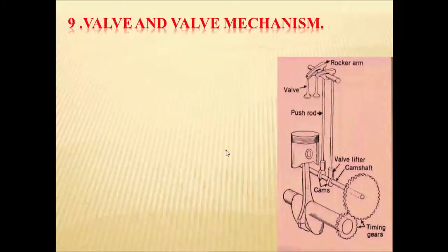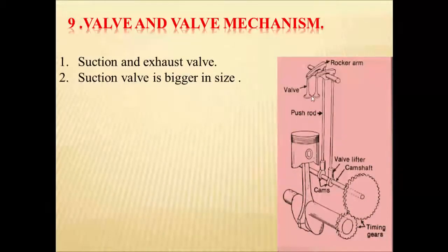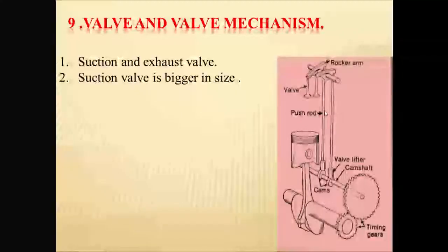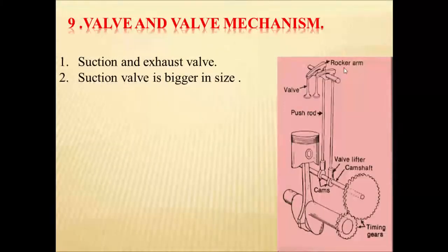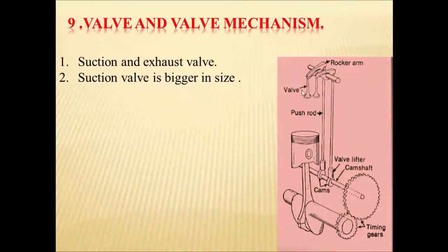Next is the valve and valve mechanisms. In the engine there are two valves: suction valve and exhaust valve. The function of the suction valve is to draw air and fuel mixture inside the engine cylinder, and the function of the exhaust valve is to draw out the combusted gases outside the engine cylinder after the power stroke. The suction valve is bigger than the exhaust valve in order to suck more air and fuel mixture inside the cylinder.